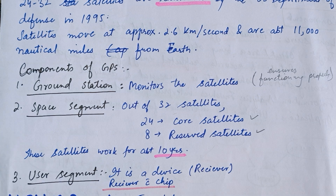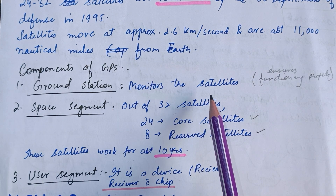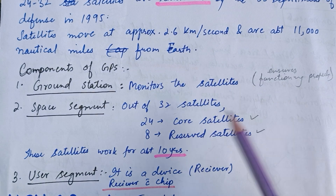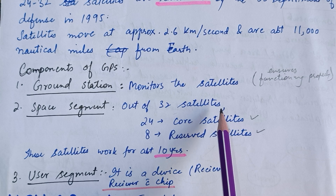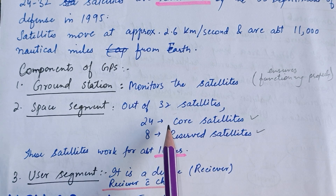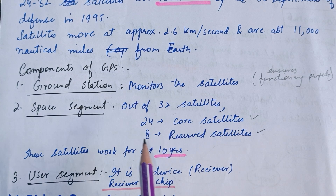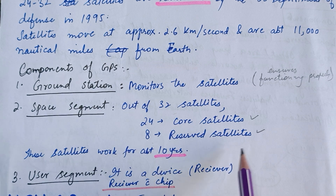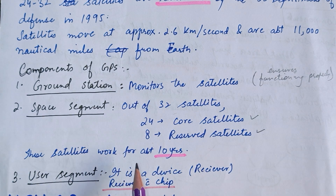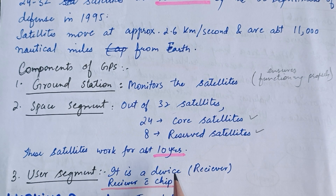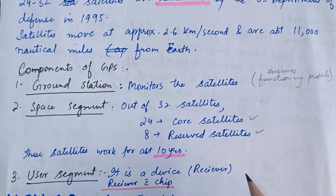Ground Station is responsible for monitoring satellites and ensures the proper functioning of satellites. For the Space Segment, out of 32 satellites, 24 satellites are called core satellites, and these satellites work for about 10 years. The User Segment is a device called a receiver, which contains a chip.